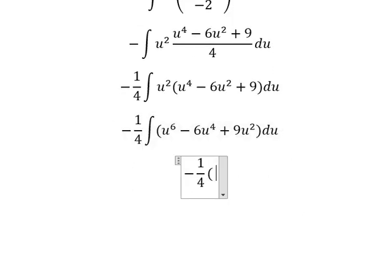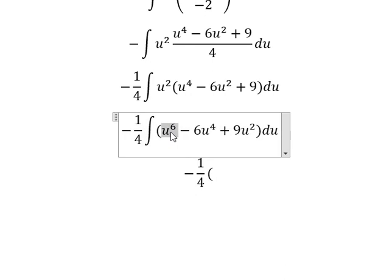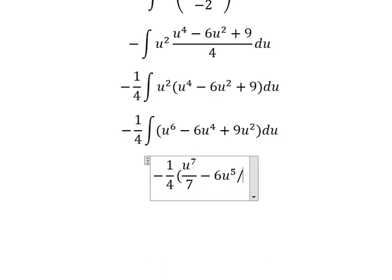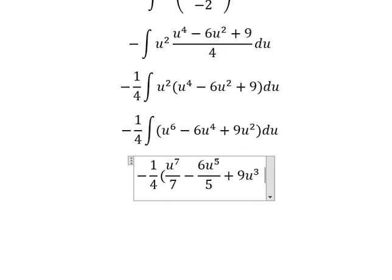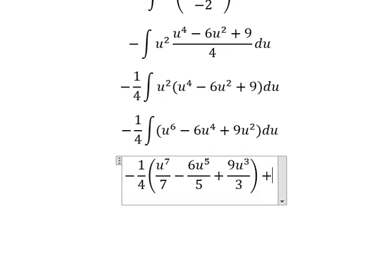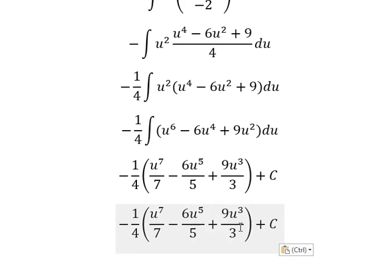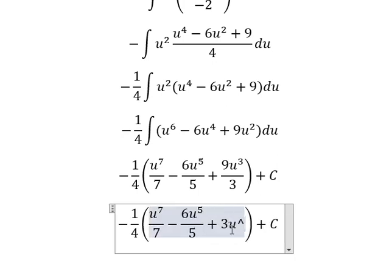We have the final answer. The integration of u to the power of 6, we have u to the power of 7 over 7. The next one is u to the power of 5 over 5, and the last one is number 3 over 3, and we put c. So number 9 divided by 3, we have 3u to the power of 3.